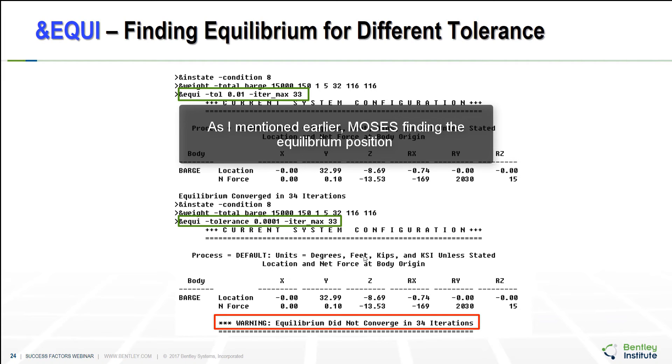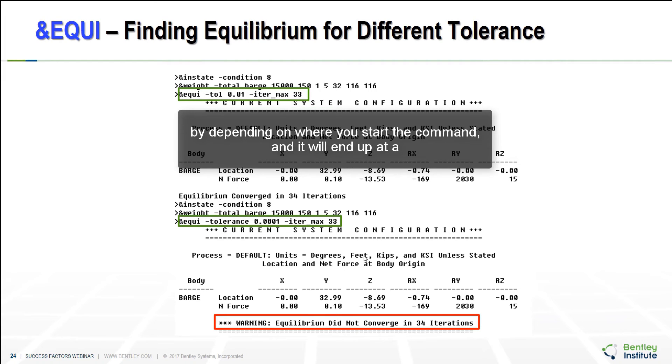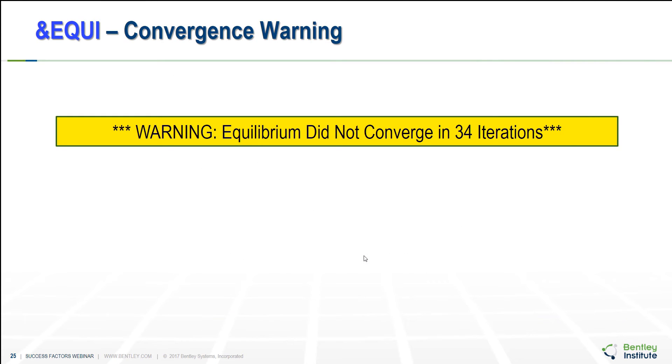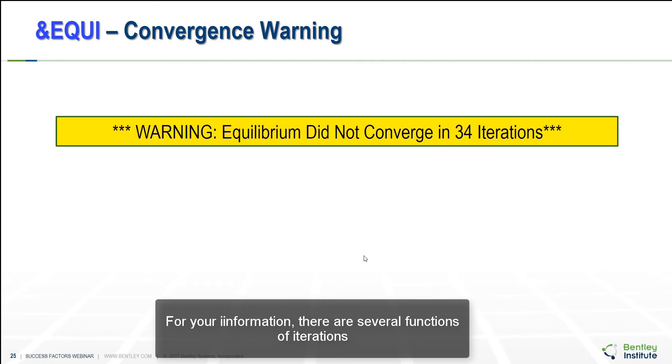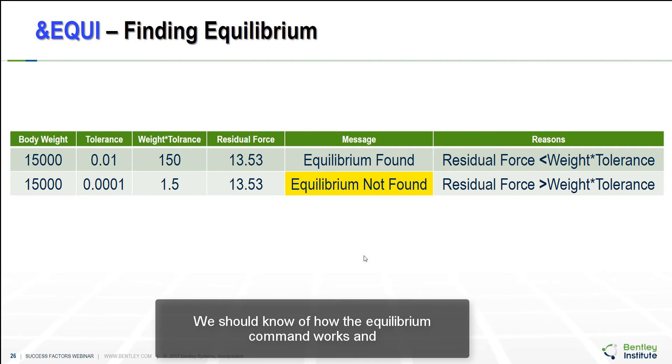As I mentioned earlier Moses finding the equilibrium position by depending on where you start the command. And it went up at a different solution. And there could be more than one solution. For your information there are several functions of iteration for finding equilibrium position. So that this is only will show up as a warning message, not an error message. It's depending on the values used for the option. This message can appear and the residual net force be near zero. This we should know of how the equilibrium commands works and how Moses communicate to have you more confidence in the results.